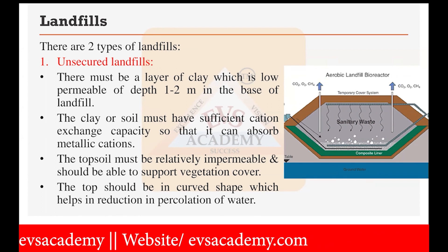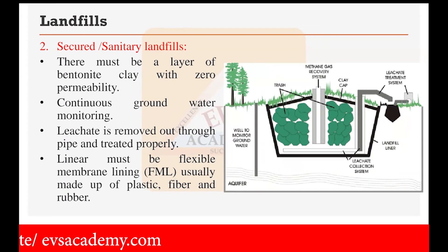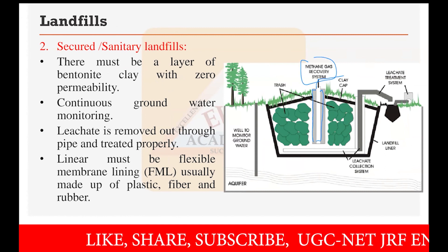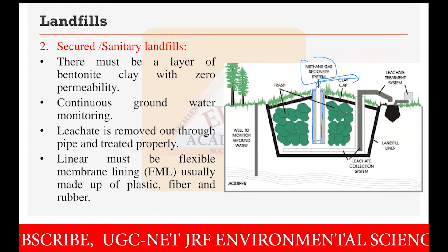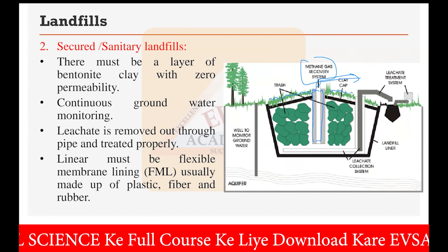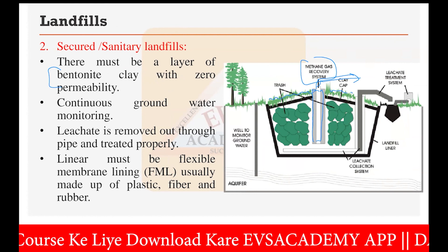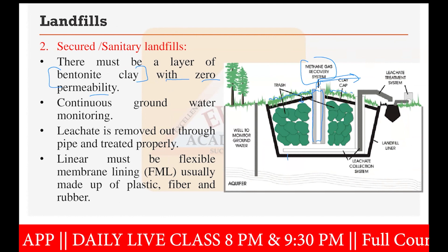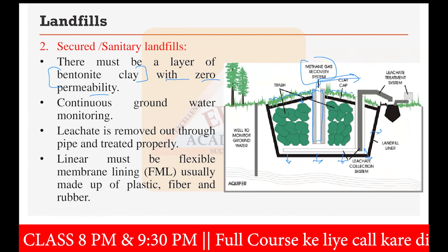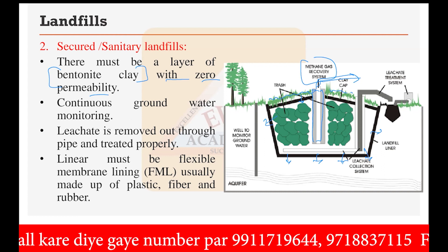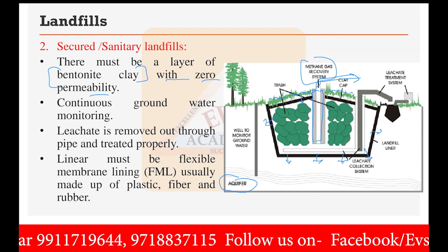In secured landfills, there is a central pipeline with a methane gas recovery system, where gas is used to generate energy or for cooking. Good vegetation is present on top. A key feature is a layer of bentonite clay, which has zero permeability — water entering cannot cross this layer, so there is no chance of contaminating the aquifer or groundwater. This is also called a sanitary landfill.